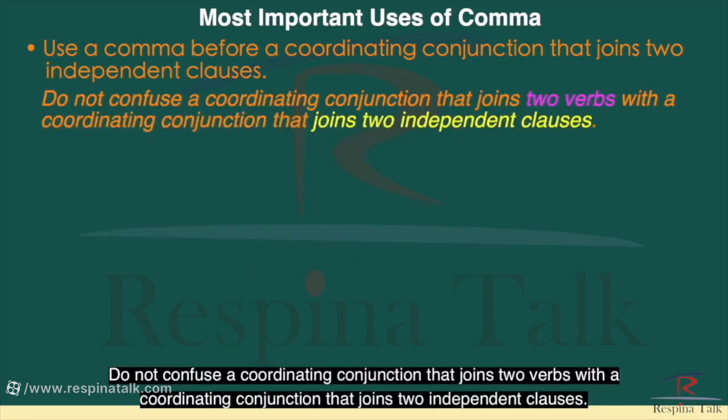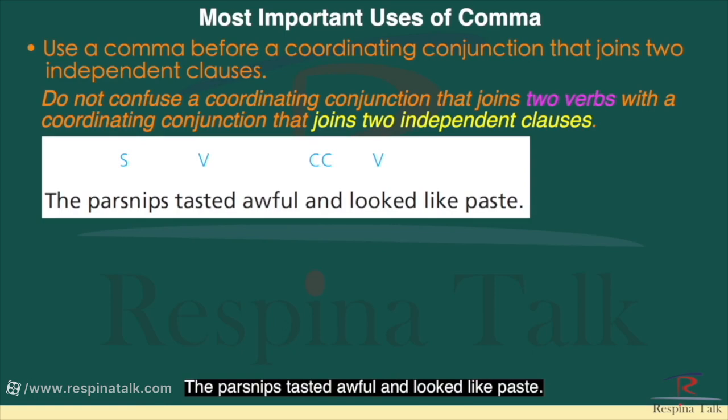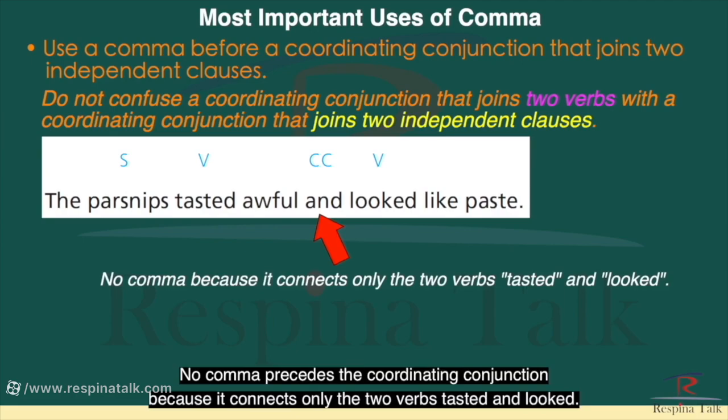Do not confuse a coordinating conjunction that joins two verbs with a coordinating conjunction that joins two independent clauses. For example: 'The parsnips tasted awful and looked like paste.' No comma precedes the coordinating conjunction because it connects only the two verbs 'tasted' and 'looked.'